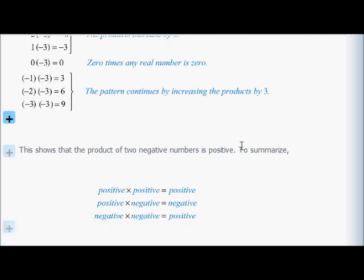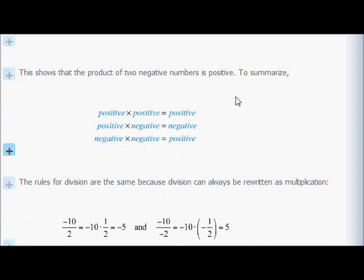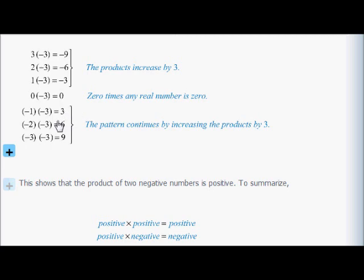So: positive times positive is positive; positive times negative is negative; negative times negative is positive. The more negative the value you're multiplying by negative 3 becomes, the more positive your result becomes. The rules for division are the same because division can always be rewritten as multiplication. Negative divided by positive is negative; negative divided by negative is positive.